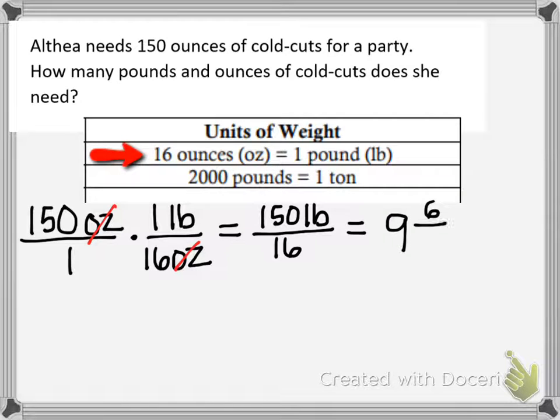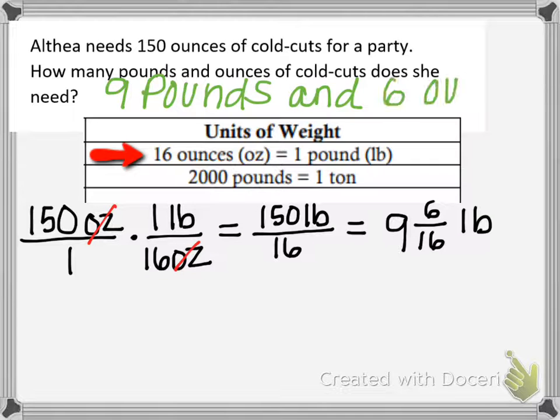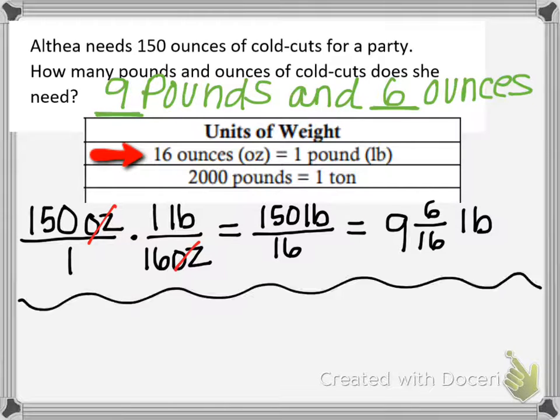So what that means is there's 6 ounces left over out of 16. So I have 9 and 6 sixteenths of a pound. That means I have 9 whole pounds and 6 ounces of another pound left over. That's one way to do it. So 9 pounds and 6 ounces.